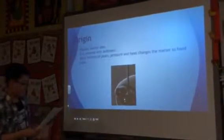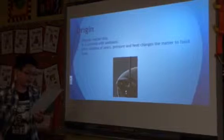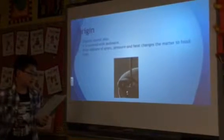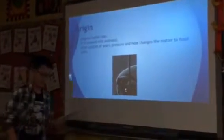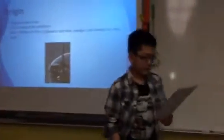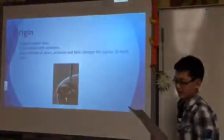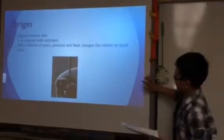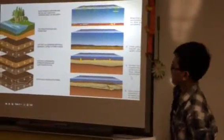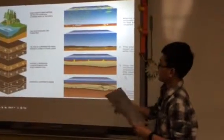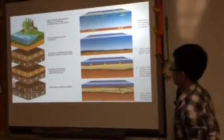Millions of years ago, organic matter died. Their remains were gradually covered in sediment. After millions of years, pressure and heat transformed the remains to oil and natural gas. A similar process happened to coal. The diagram on the left talks about how coal formed, and this one is about how oil forms in the sea.